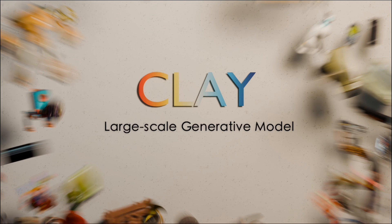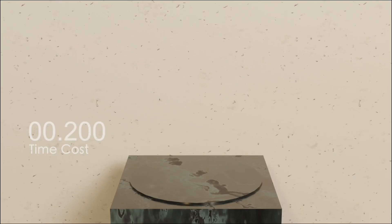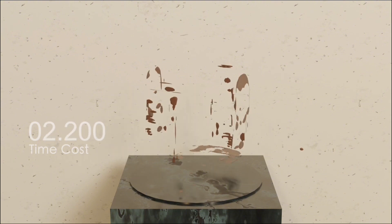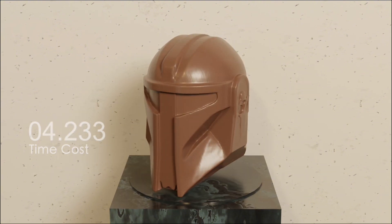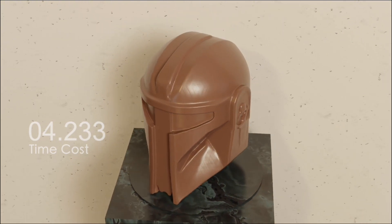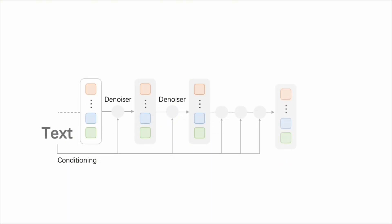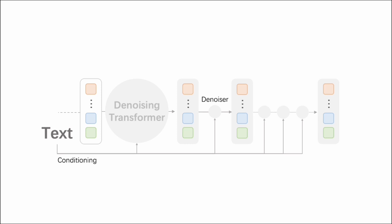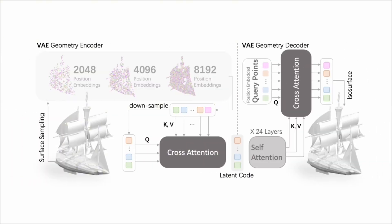The core of Clay is the large-scale generative model. Inspired by 2D generative models, our approach denoises 3D data in a compressed latent space, which is symbolically smaller and more computationally efficient than full 3D dimensions. Our latent diffusion model, constructed purely with transformers, features a VAE specially designed to handle point clouds at various resolutions, ensuring an adaptive latent size.